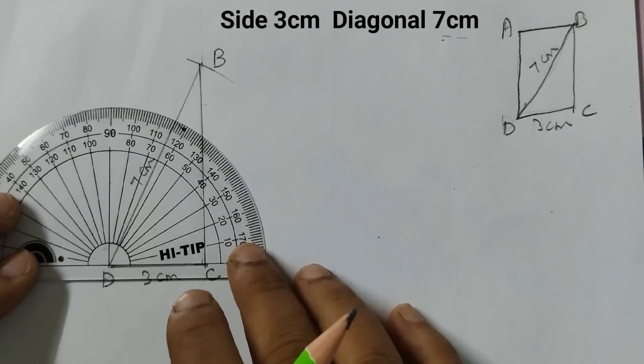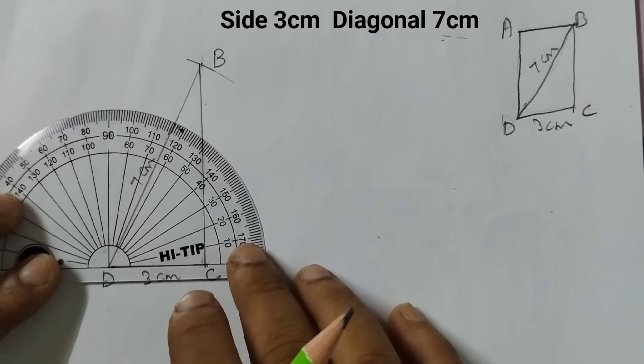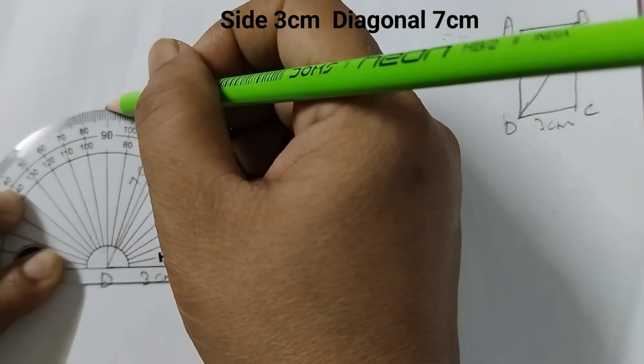Now we will draw a perpendicular at D, 90 degrees.